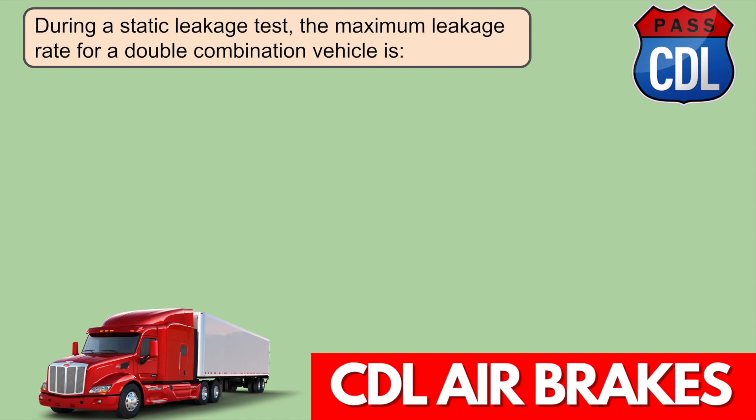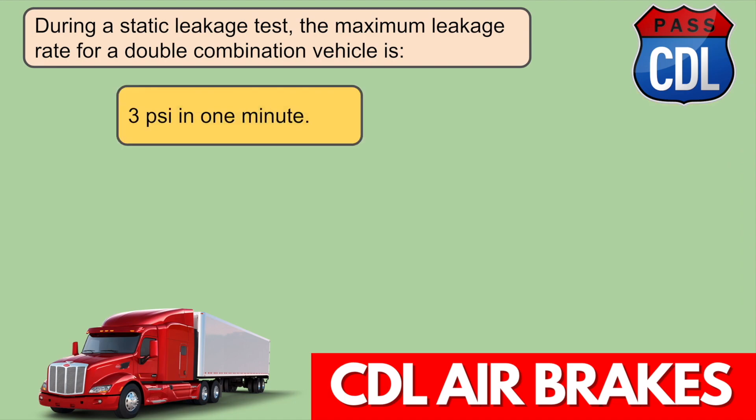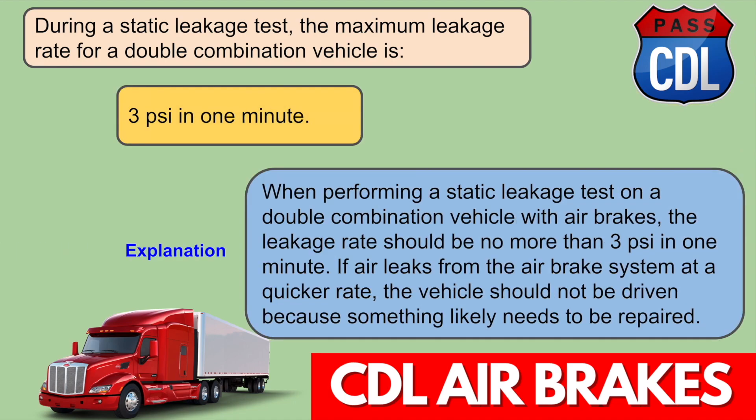During a static leakage test, the maximum leakage rate for a double combination vehicle is 3 PSI in one minute. When performing a static leakage test on a double combination vehicle with air brakes, the leakage rate should be no more than 3 PSI in one minute. If air leaks at a quicker rate, the vehicle should not be driven because something likely needs to be repaired.